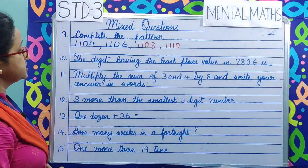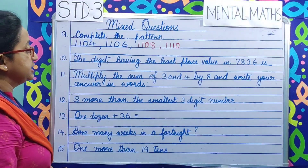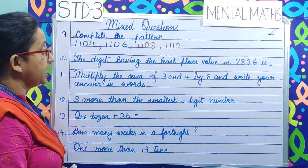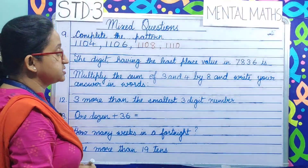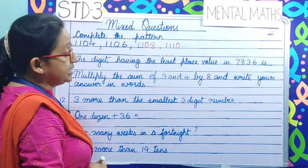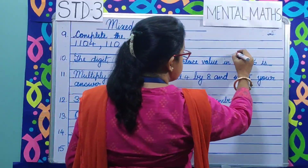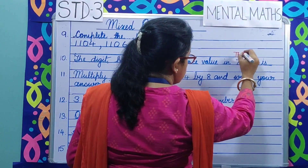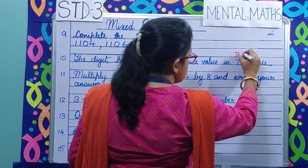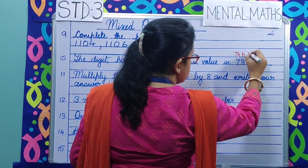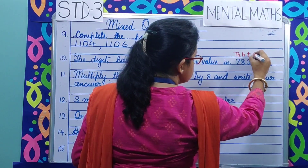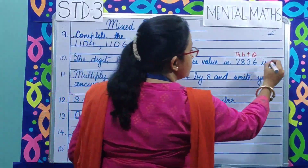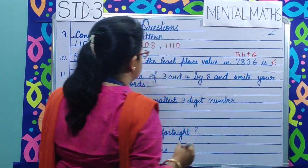Question number 10. The digit having the least place value in 7836. Let us find the place value of each digit: 7 thousands, 8 hundreds, 3 tens and 6 ones. So the digit with the least place value is 6.